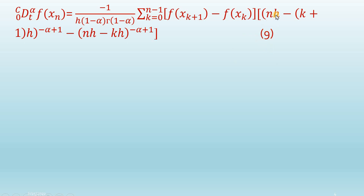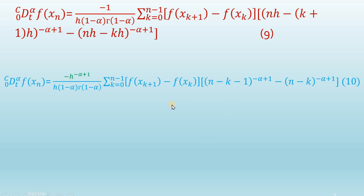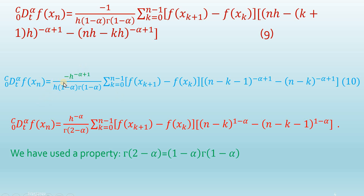In equation 9, the factor h is common, and it carries the power minus alpha plus 1. Taking h^{-alpha+1} common gives equation 10. The h^1 in the denominator cancels with h^1 in the numerator, leaving only h^{-alpha}. The minus sign is also taken inside, making the second term positive and the first term negative, as shown highlighted in red.